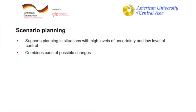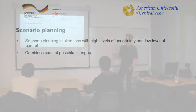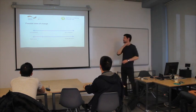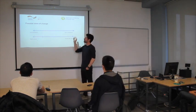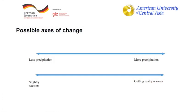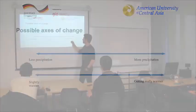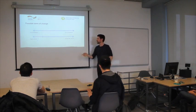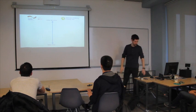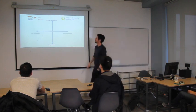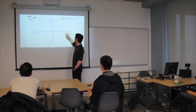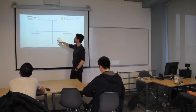In scenario planning, there are supports in situations, what I said, there are high levels of uncertainty and low level of control. And you can actually combine axes of possible changes. This means, very simplified now. Okay, we have this possible axis of changes, so especially in precipitation. Could be less precipitation, could be more precipitation, just one axis of change. Or it can get slightly warm, and it can get really warm. And then what we did is that you just put basically these two axes on top of each other, that you have crossed, and then you have actually, you can have what is called in these different scenarios.